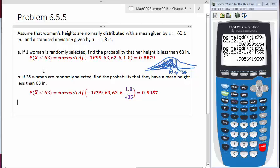So these two problems are put next to each other so that you can see the difference and then the power of the central limit theorem. So the basic difference is that if you're looking for one woman and finding the probability that that particular woman's height is less than 63, you're using the regular normal CDF.